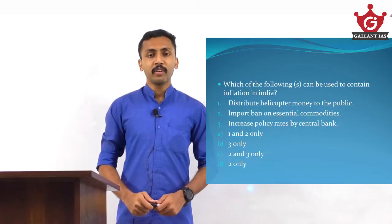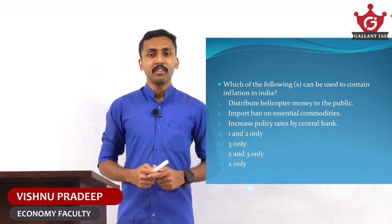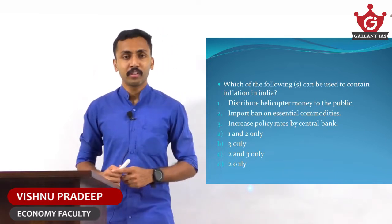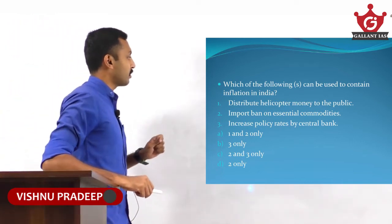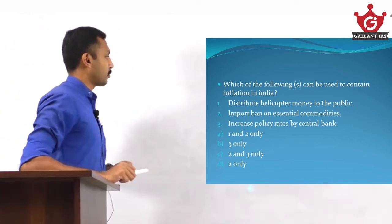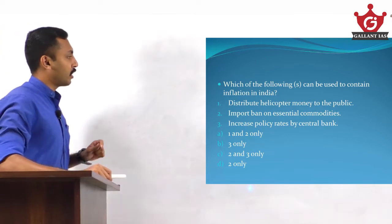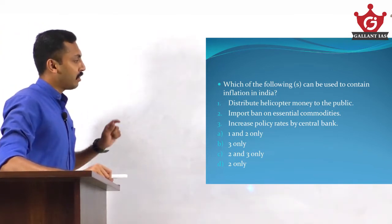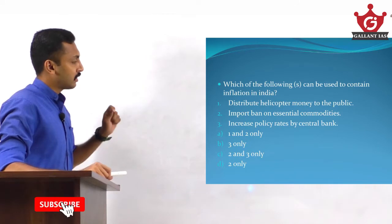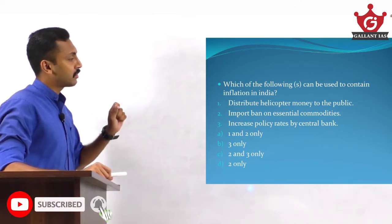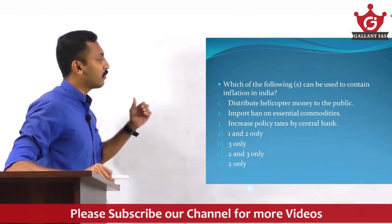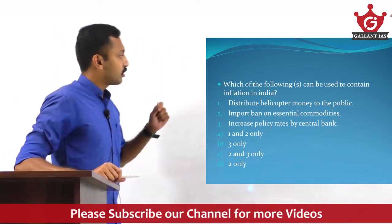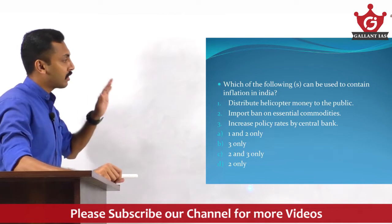Hi everyone, welcome to Galen the IAS Let's go 120 plus. Today's question is from economy: which of the following can be used to contain inflation in India? The three statements given are: distribute helicopter money to the public, import ban on essential commodities, and increase policy rate by central bank.